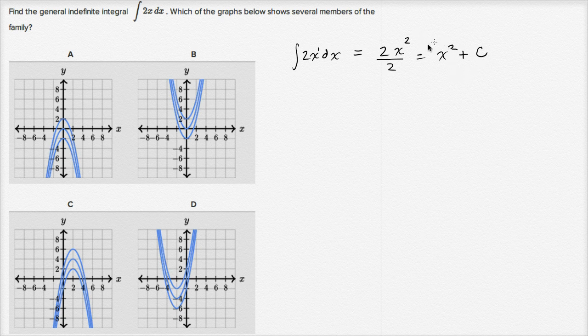So the antiderivatives, I guess you could say here, take this form. Take the form of x squared plus c. Now what does that mean visually?